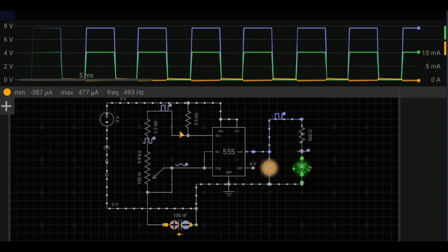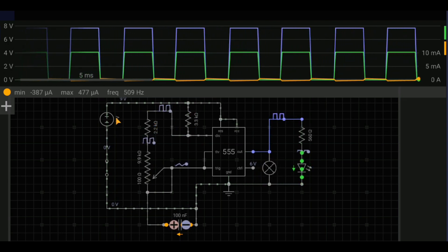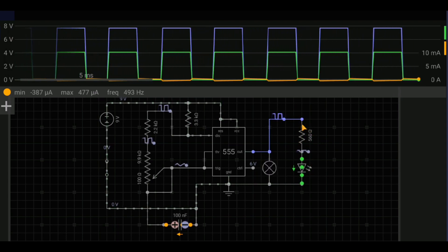Connect a resistor R1 between pin 7 discharge and pin 6. Connect another resistor R2 between pin 7 and pin 2.